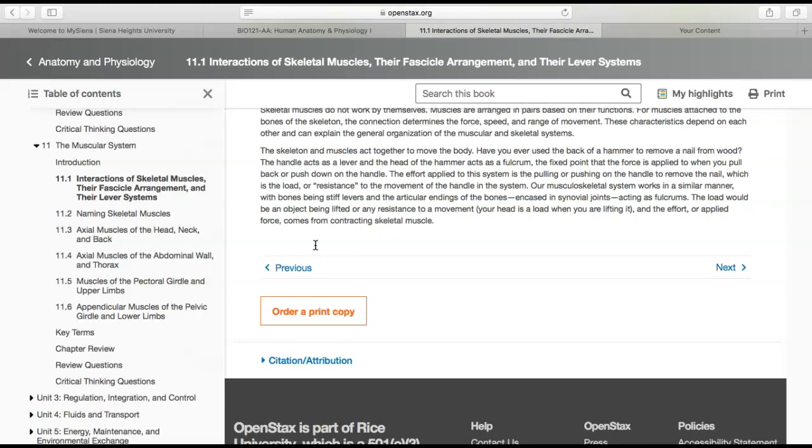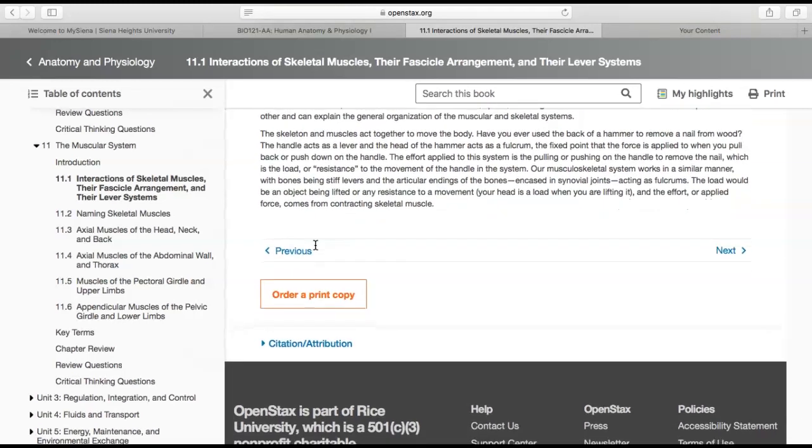The fixed point that you're applying force to when you pull is the fulcrum. The lever allows you to extend a greater force. Our musculoskeletal system works in a similar manner to most tools. If you look at biology, you'll figure out ways to do the work you need to do, because biology has figured it out over millions of years of evolution.